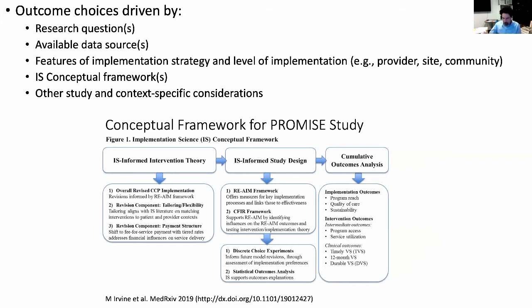The study I mentioned was the PROMISE study. We did have a conceptual framework that informed our study design where we drew on both the RE-AIM framework and the CFIR frameworks. This was because we really did have a need for some of the strengths of each of these frameworks, and we justified the choice of these frameworks based on that. From these frameworks, we were able to make some good justified choices of implementation outcomes, which in our case were program reach, quality of care, and sustainability.